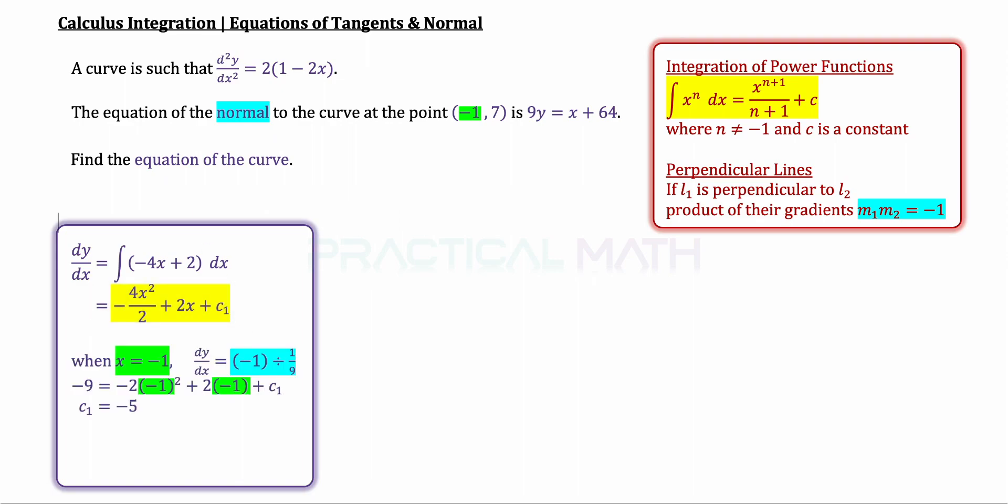In the next steps, we have to find the gradient of the tangent. So, we will take -1 divided by the gradient of the normal, which in this case is 1/9. So, gradient of tangent, which is dy/dx, is equal to -1 divided by 1/9 to give us -9.